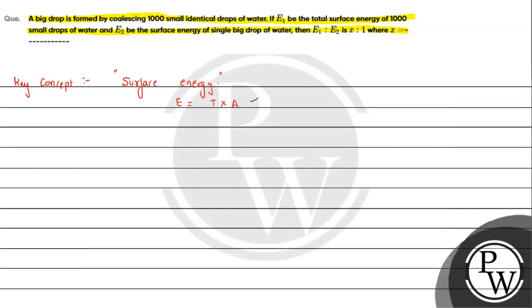First, we have 1000 small drops forming one big drop. The volume remains the same. The volume of 1000 small drops equals the volume of the big drop. A small drop has radius r, so 1000 × (4/3)πr³ = (4/3)πR³. From this situation, we can see that the big drop's radius R is 10 times the smaller radius r.